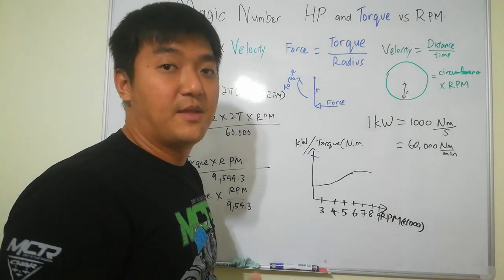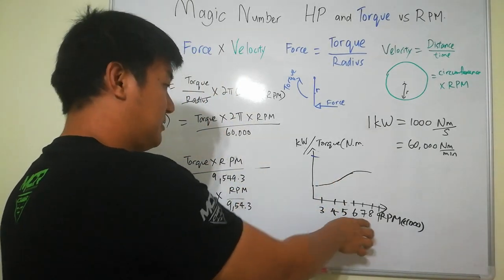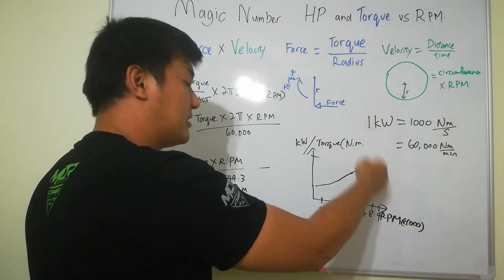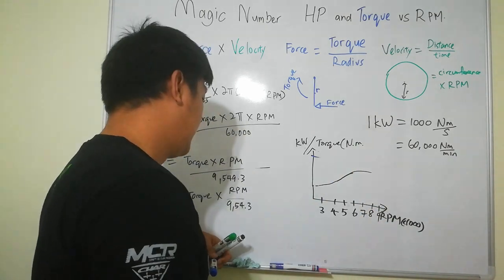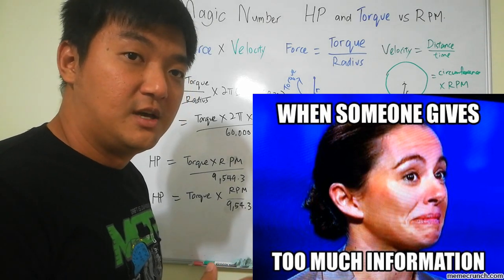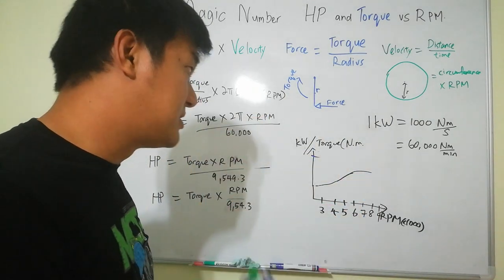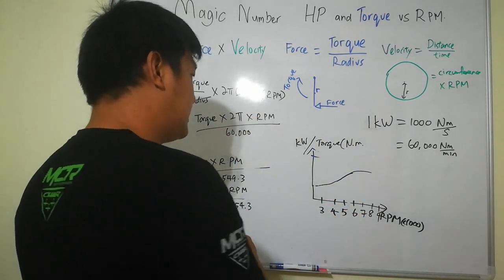But if your engine doesn't rev that much it will definitely will not intersect because your RPM cannot. If your RPM can reach 9,000, however I'm going to play some trick to it because there are some people they try to change some of the units from here and make you become very confused.